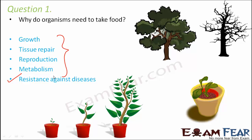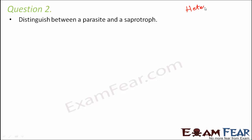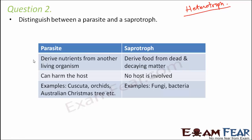Question number two: Distinguish between a parasite and a saprotroph. The similarity: both are heterotrophs — both depend on some other organism for their food. The difference: a parasite derives its nutrients from another living organism, called the host. A saprotroph derives food from dead organisms, not other living ones. A parasite can harm the host, whereas in saprotrophy there is no host involved since no other living organism is involved.